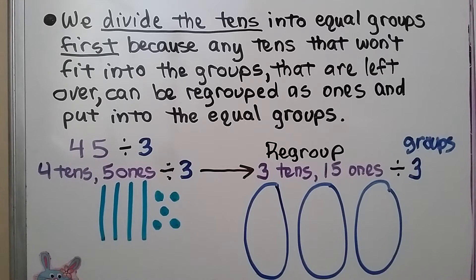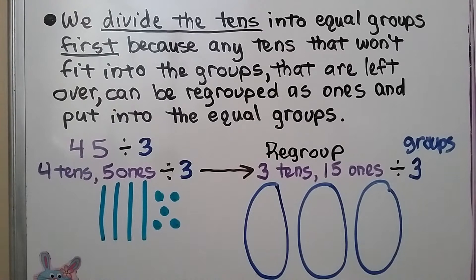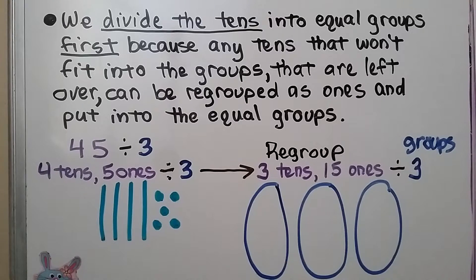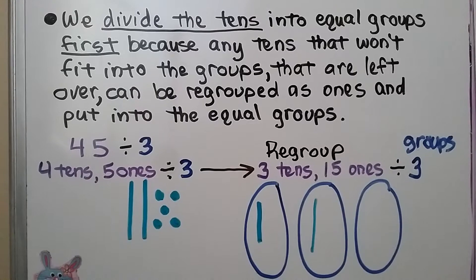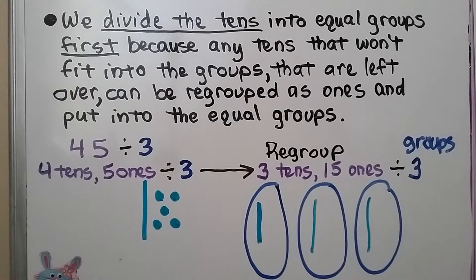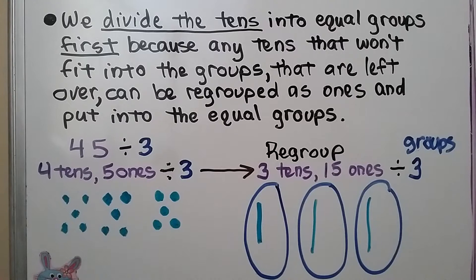Here we have 45 divided by 3 — that's four tens and five ones divided by 3. Because our divisor is 3, we make three groups. We take the tens and put them equally into the groups — one 10 into each group. Now we have one 10 and five ones left over, so we turn that one 10 into 10 ones, giving us 15 ones.